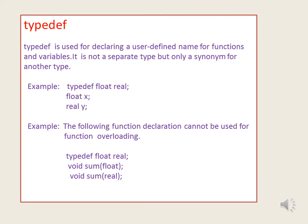Next is typedef. Typedef is nothing but giving a new name to an existing data type — creating a synonym or alias for it. For example, the general syntax is: typedef float real. This means I have the data type float, and I want to name it as real. So if I write float X and real Y, both are float only. It is just a synonym — you rename float as real.